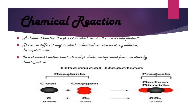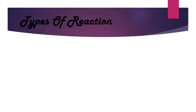For example, Carbon obtained from coal combines with Oxygen (O2) to form Carbon Dioxide (CO2). The arrow is pointing towards CO2, so CO2 is our product, and Carbon plus Oxygen is our reactant. So the reactants are converting into the product.